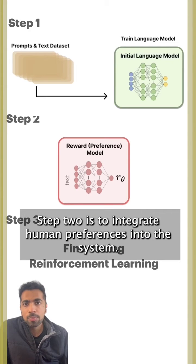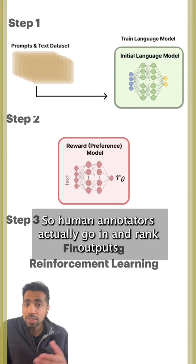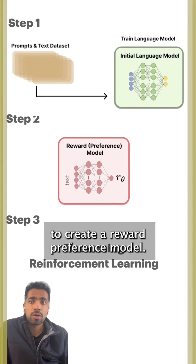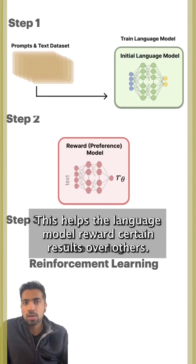Step two is to integrate human preferences into the system, so human annotators actually go in and rank outputs to create a reward preference model. This helps the language model reward certain results over others.